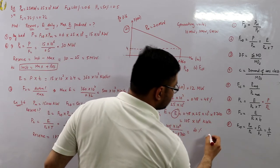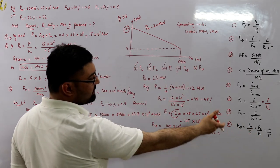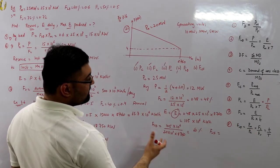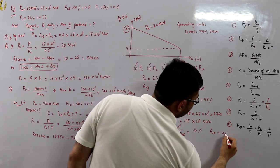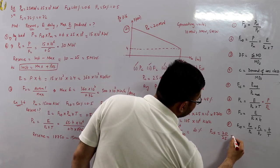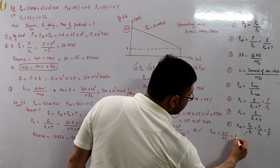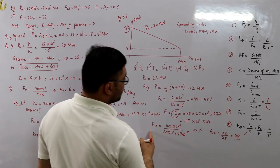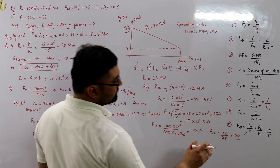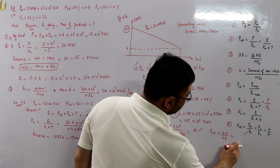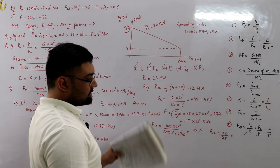The utilization factor F = PM ÷ PC = 20 megawatts ÷ 25 megawatts = 0.8, or 80%. We cannot use the FC ÷ FU formula here because FU is not given.